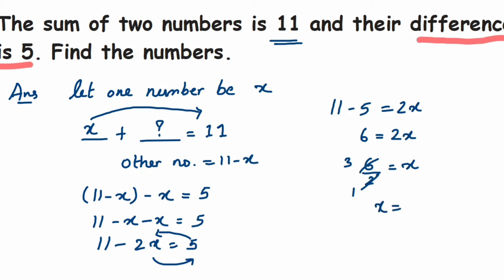So from here we can conclude x value is equal to 3. So we got only one number, we have to find out another number which is 11 minus x. So 11 minus x will be equal to 11 minus 3 which is equal to 8. So we got both the numbers. We can conclude that therefore 3 and 8 are two numbers. So that's it, this is the solution for this problem.